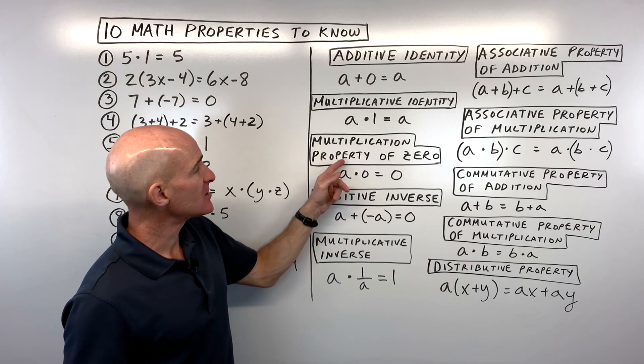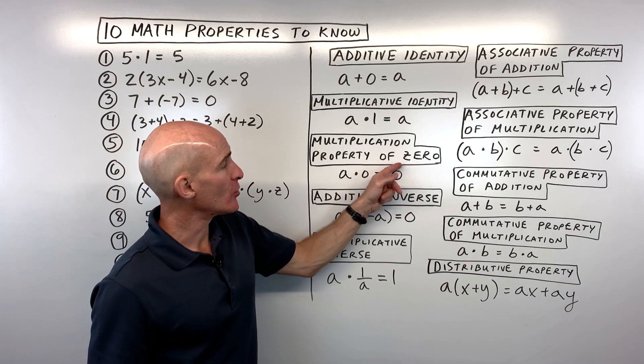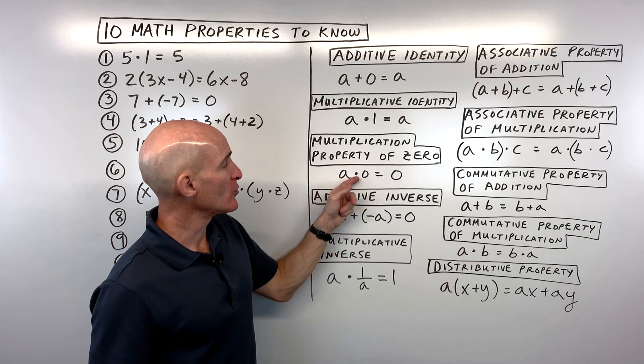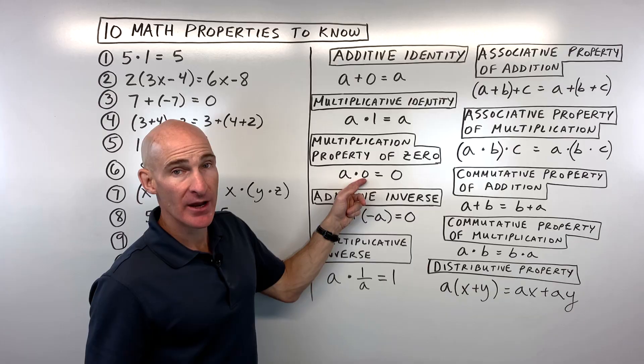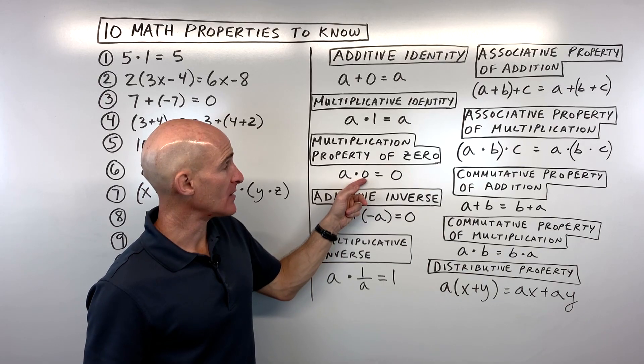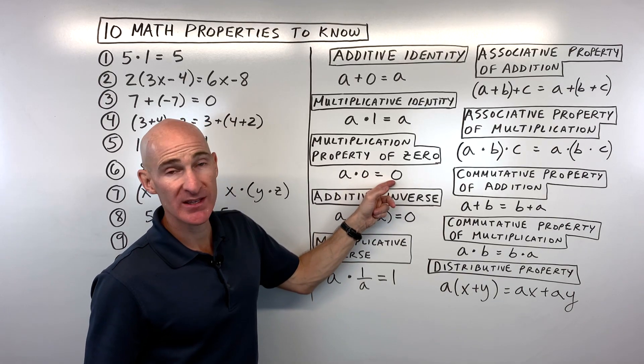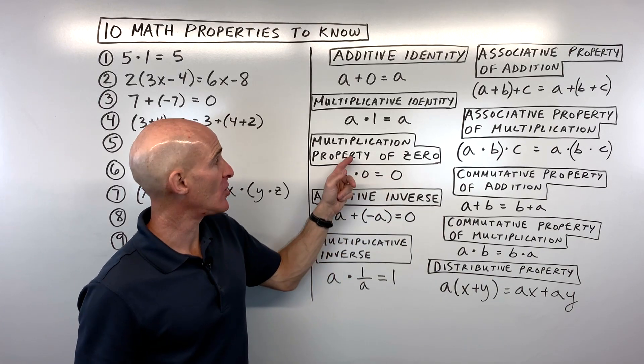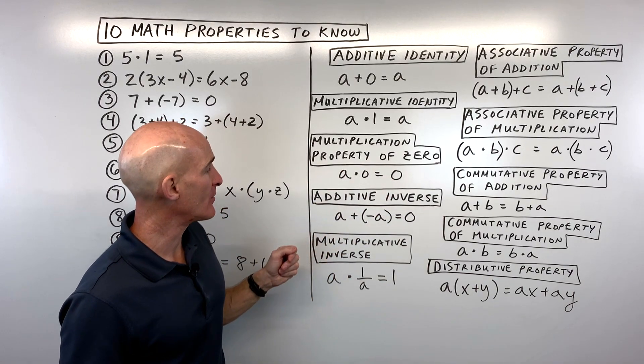The multiplication property of zero: whenever you multiply a number or quantity by zero, you get zero.